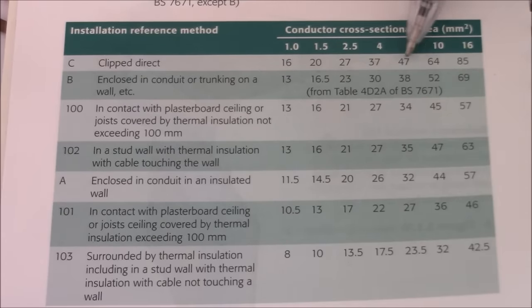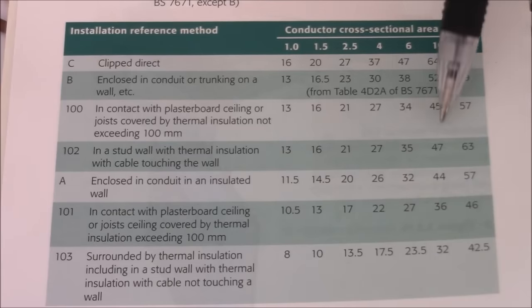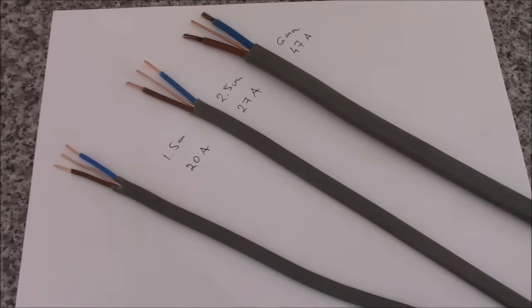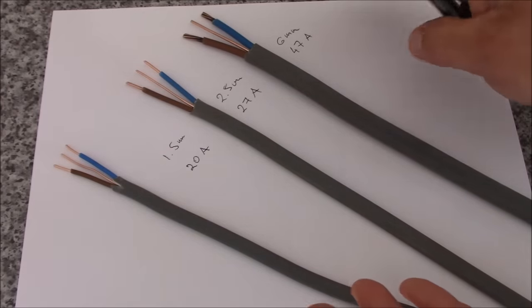So basically when you clip direct the cable the rating is very high. Any of the other methods with contact with the insulation the rating goes down. So very useful book and very useful table.